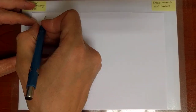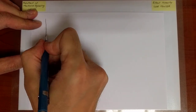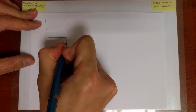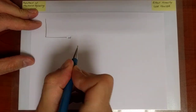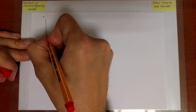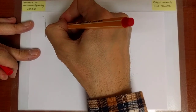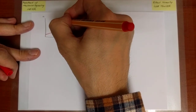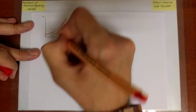To answer that question, we need to answer a slightly different question, based on the graph I have already drawn. We have the number of cycles on one axis and the size of the crack on the other. We know that the crack, starting from an initial size, will grow and will do so at an ever-increasing rate dA/dN.